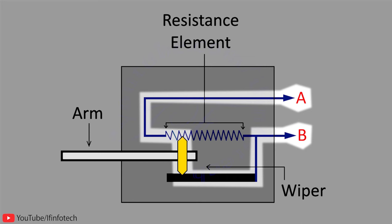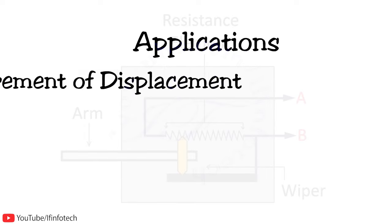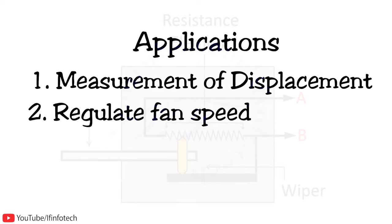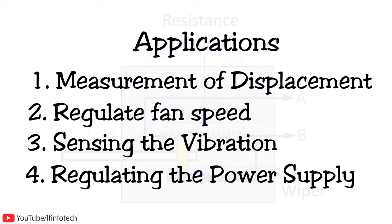The output of the potentiometer is directly calibrated in terms of displacement. Linear potentiometers are used for measuring displacement, regulating fan speed, sensing vibration, and regulating power supply.